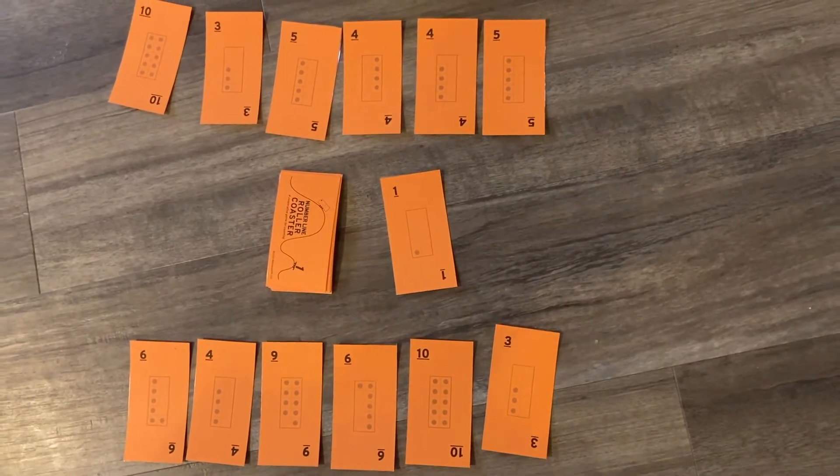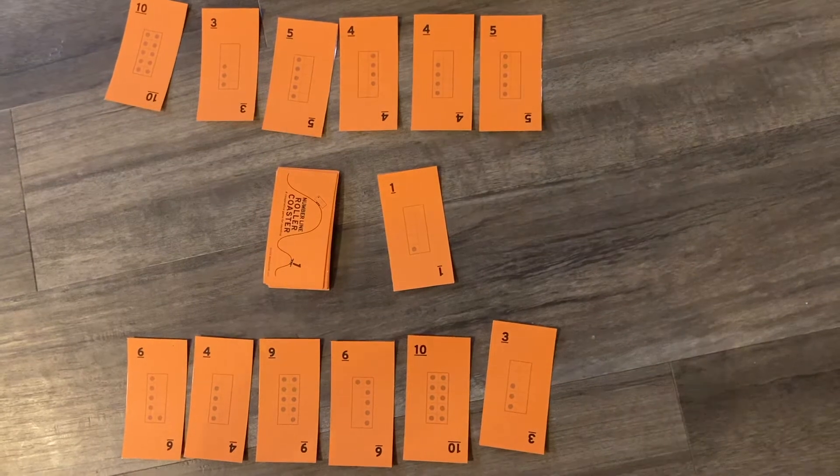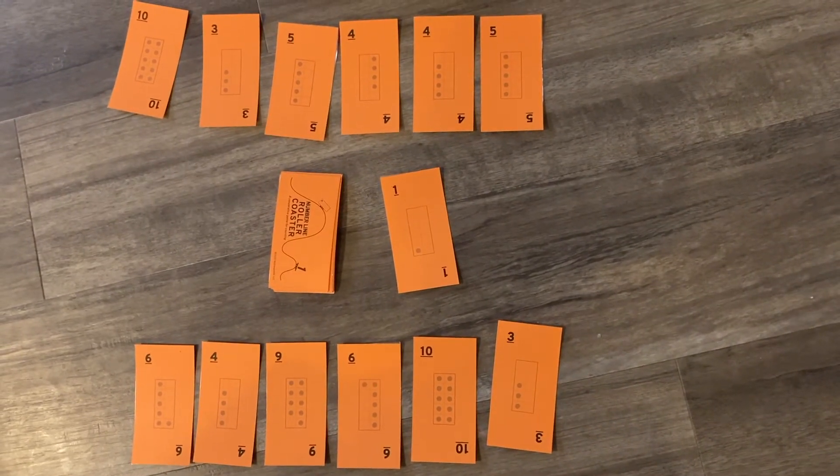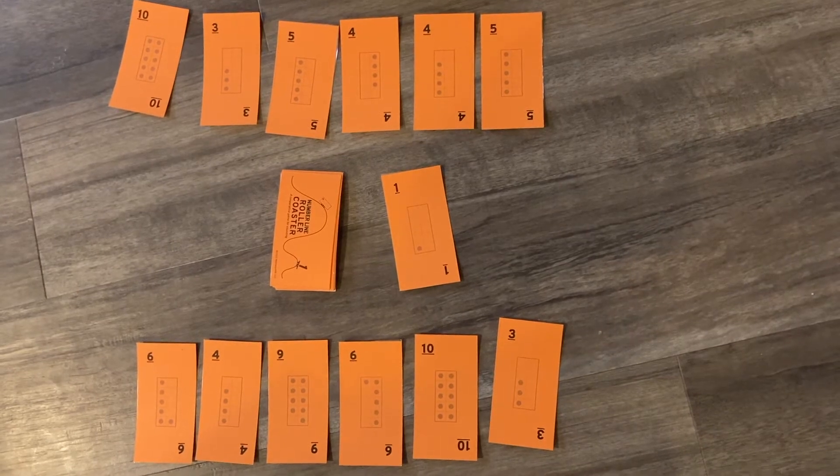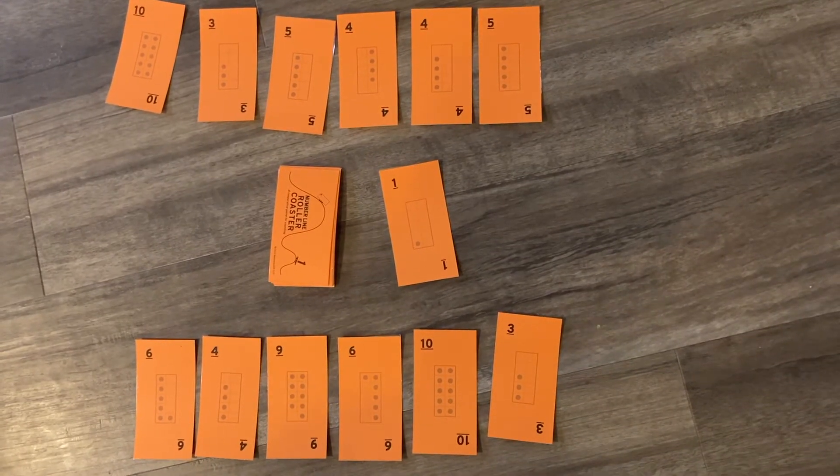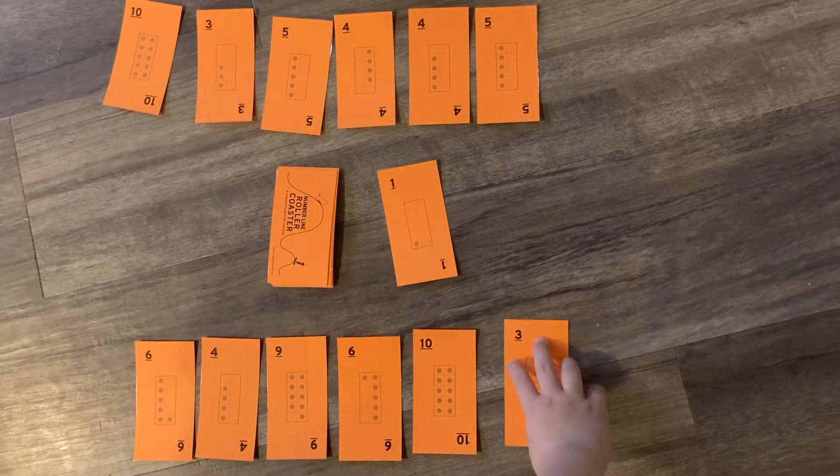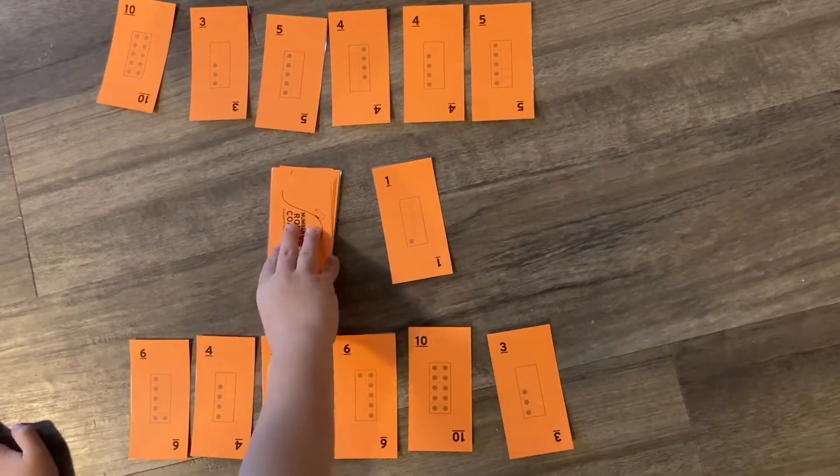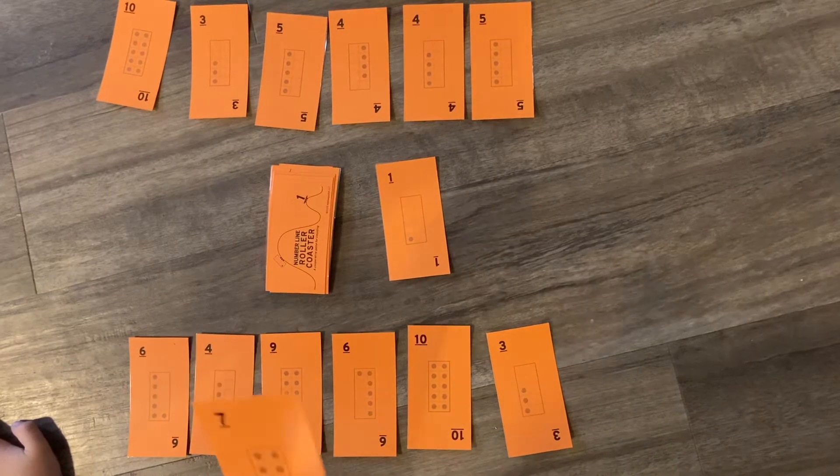And now we are looking for any number right above or below that card, except it's one, which means it's the very end, the bookend. So now the only thing they could play is a two. Does anyone have a two they could play? No. I checked through all the cards. We're already stuck. Okay, so let's turn over the next one.